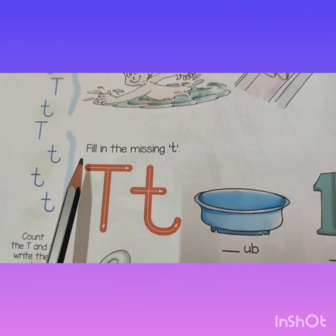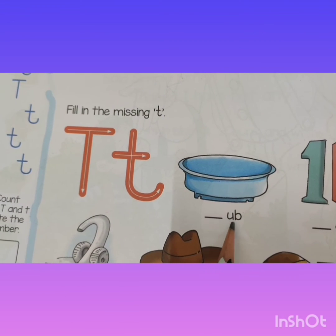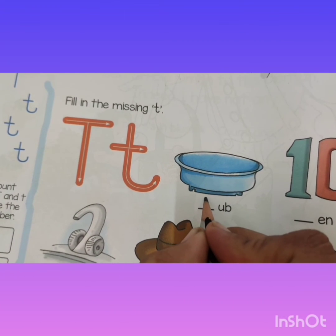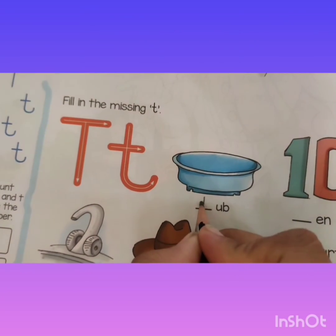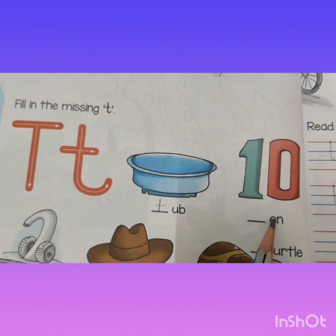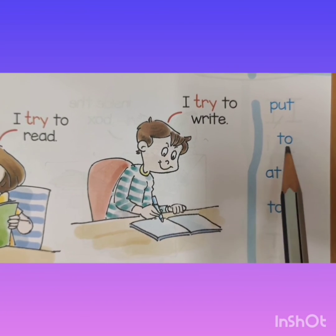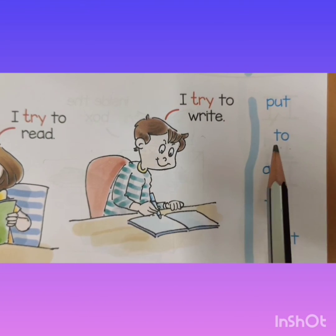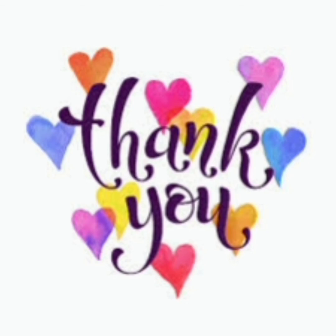Now look here — fill in the missing sound. 'Ch' — chub. You have to write small 'ch.' 'Ch' — ten. And one more side word is here: T-O, two. What you have to do? You have to circle 'two,' count it, and write it here. Thank you dear kids, have a wonderful day, and do your work neat and clean.